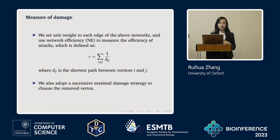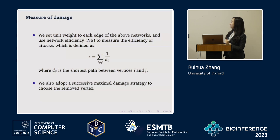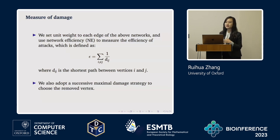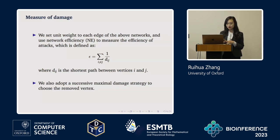To measure how much the attacks damage the network, we use network efficiency, defined as the sum of the inverse of the shortest paths between any vertices I and J in the network. The more distant two vertices, the less efficient the communication between them. We also use a successive maximum damage strategy to choose which vertex to remove from the network.